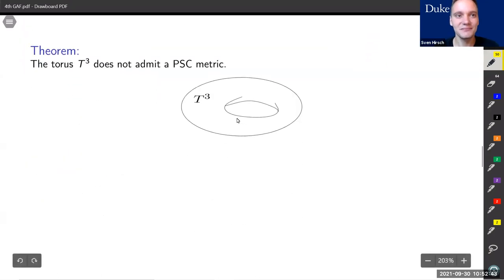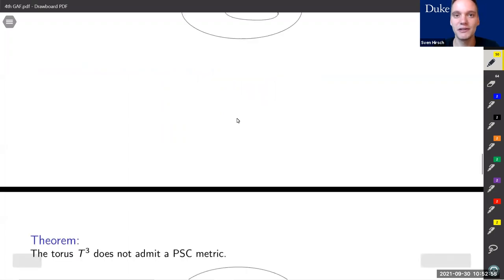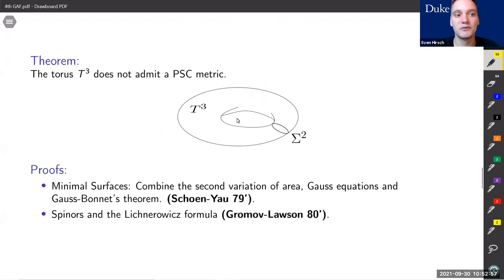All right, let's get started. We have the classical theorem that the free torus does not admit a metric of positive scalar curvature. This is a well-known statement which has been proven already some time ago. There's a proof using minimal surfaces by Schoen and Yau.